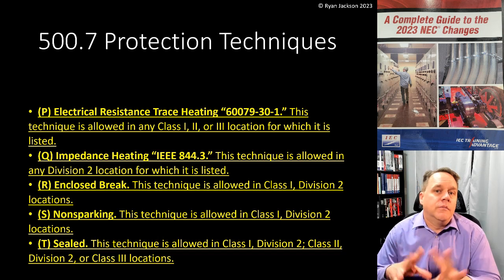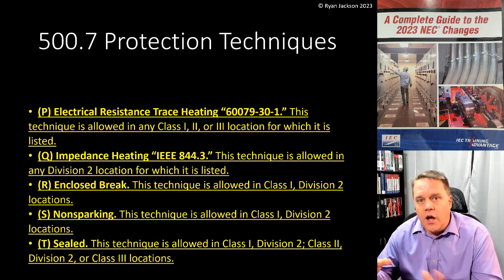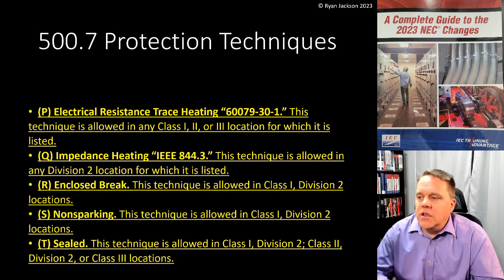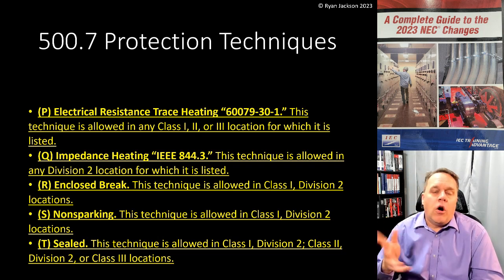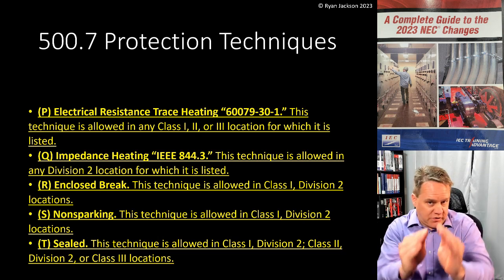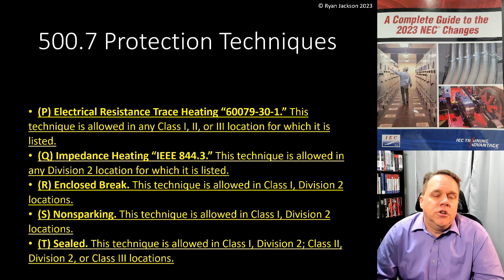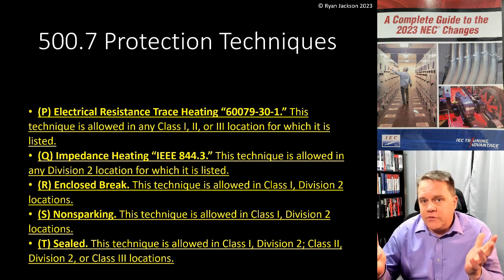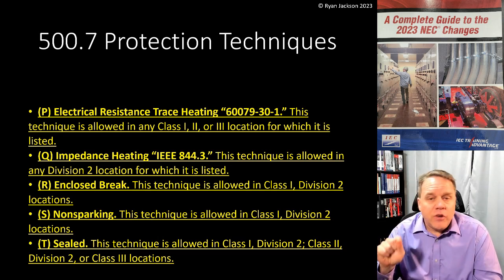Most of this comes from the zone method of classification, which is what they use in Canada and Europe. So we now have electrical resistance trace heating, impedance heating, enclosed brake, non-sparking, sealed — all of these are newly specifically mentioned in 500.7, though they're not necessarily new techniques because they've been used outside the US for several years.